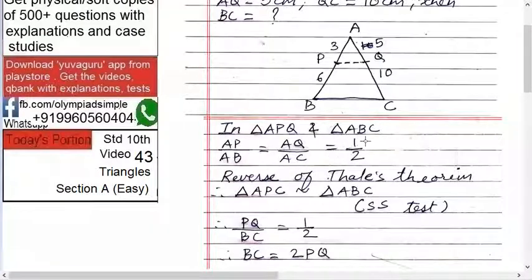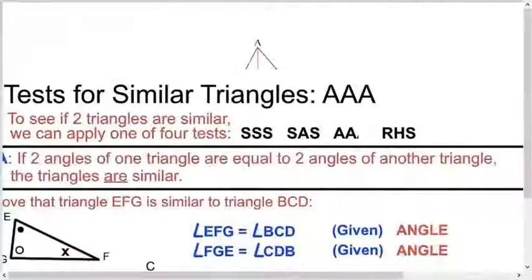Triangle APQ is similar to triangle ABC by SSS test. There are four tests for similarity: SSS, SAS, AA, and RHS. You can study that, we have studied it in the earlier standard ninth, in fact eighth or ninth somewhere.